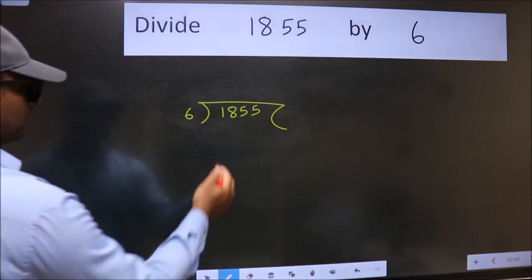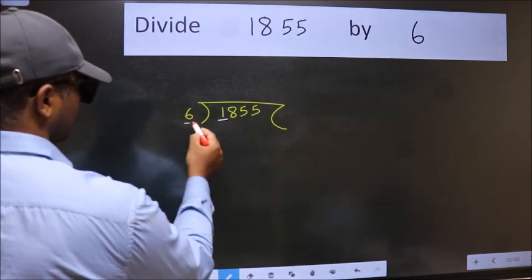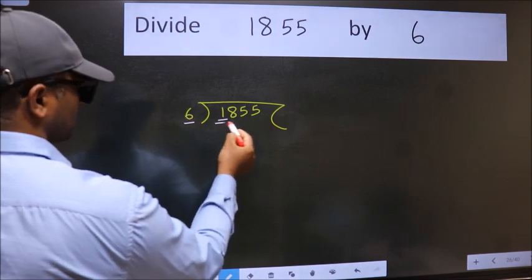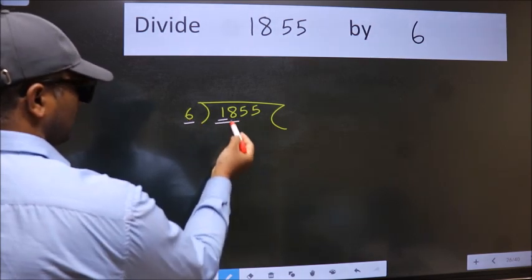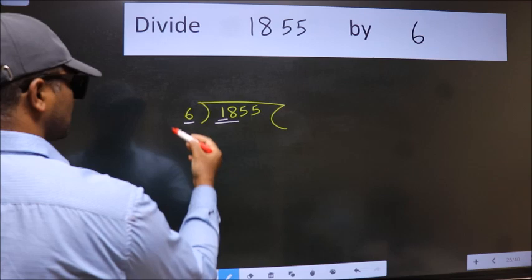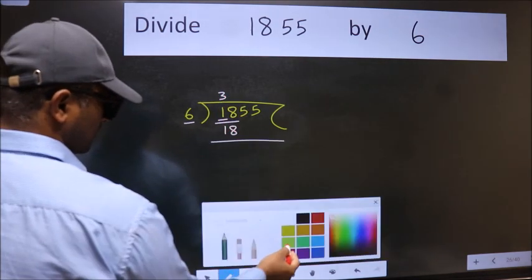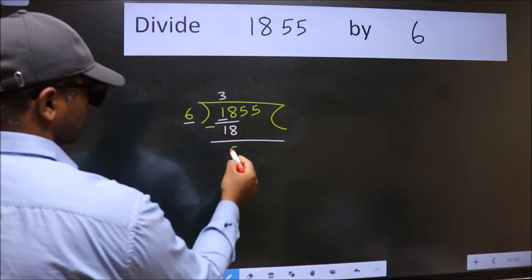Next. Here we have 1 and here 6. 1 is smaller than 6. So we should take two numbers, 18. When do we get 18 in the 6 table? 6 threes, 18. Now we should subtract. We get 0.